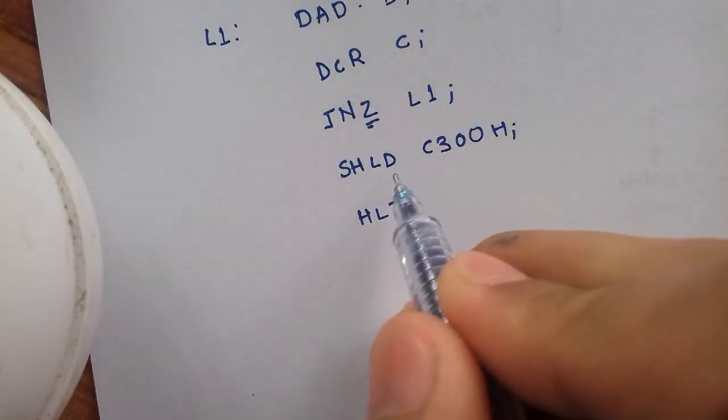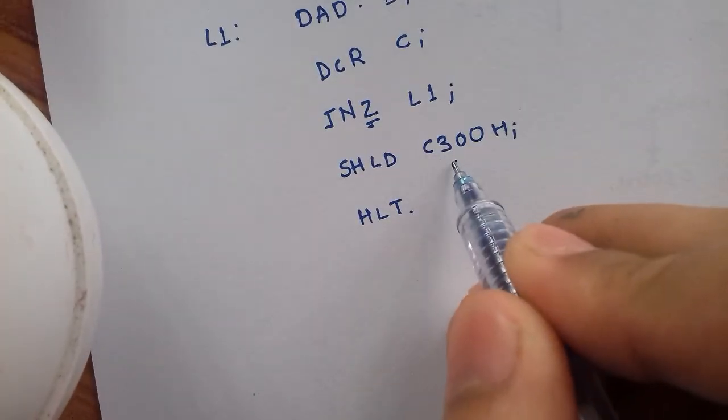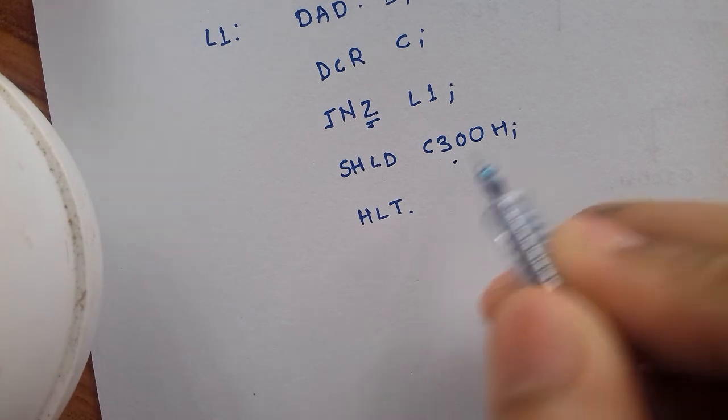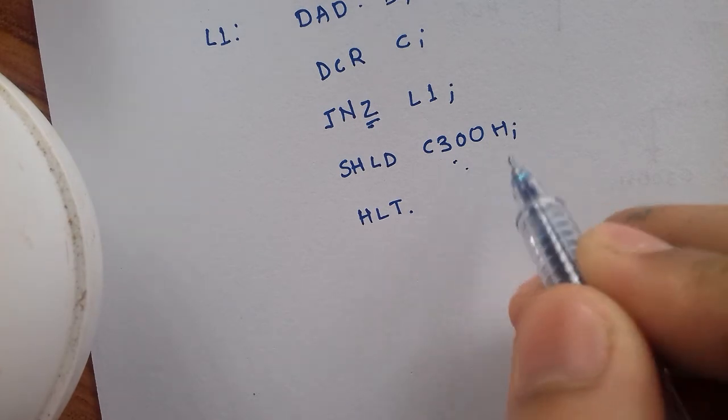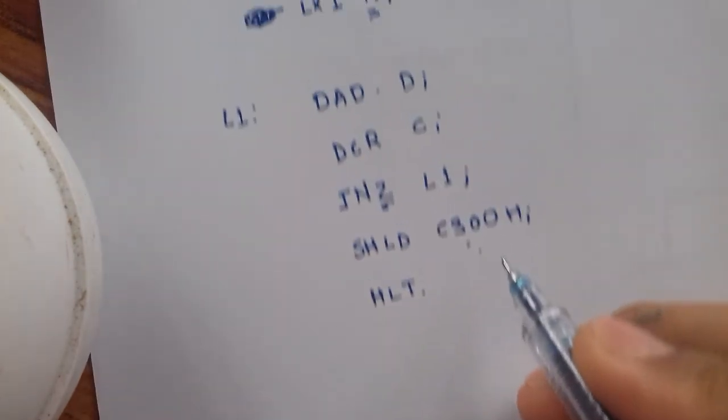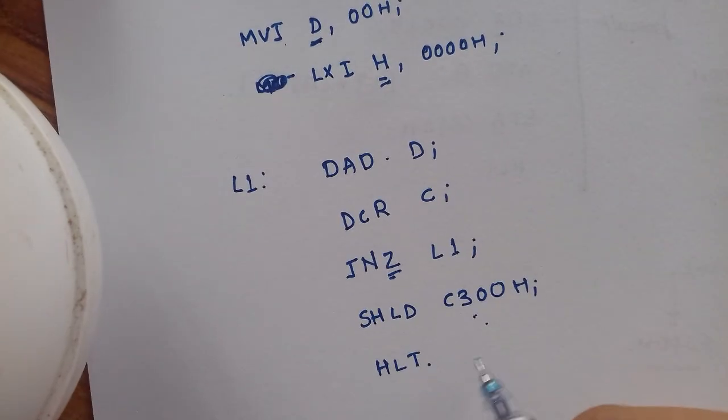We will use SHLD, which stores the content of L register to the specified memory location and content of H register to the next higher memory location. This completes the multiplication of two 8-bit numbers.